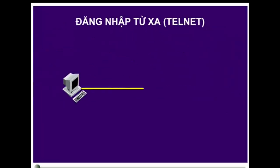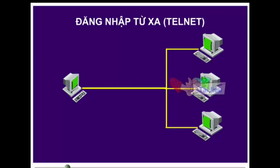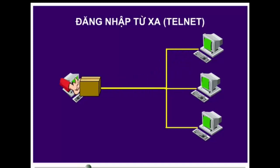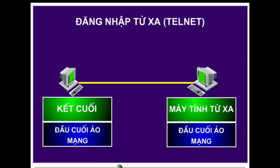Telnet là một giao thức cho phép đăng nhập từ xa, nghĩa là từ một vị trí, người dùng có thể truy nhập và sử dụng nhiều máy tính ở các vị trí khác nhau. Điều này cho phép người sử dụng dịch vụ hoặc tài nguyên không có trên máy tính của mình. Dịch vụ Telnet quy định một kênh truyền thông giữa một kết nối cuối đầu vào và một máy tính mô phỏng một kết nối vào ra ảo, được gọi là đầu cuối ảo mạng. Telnet sử dụng cổng TCP23.